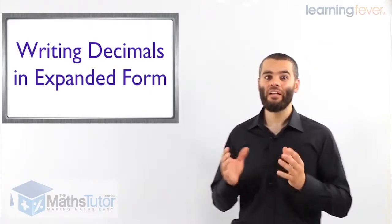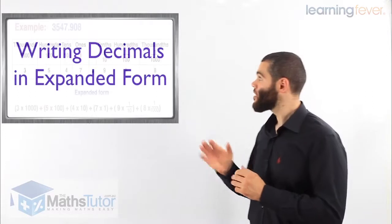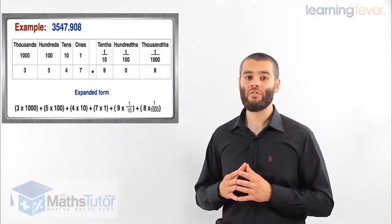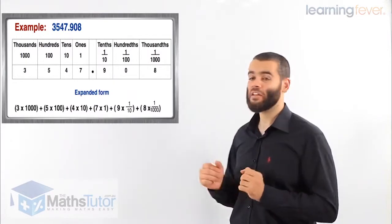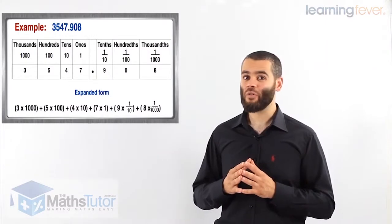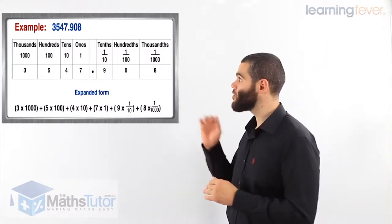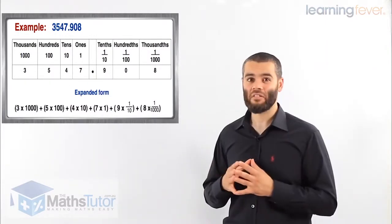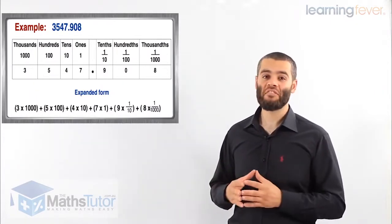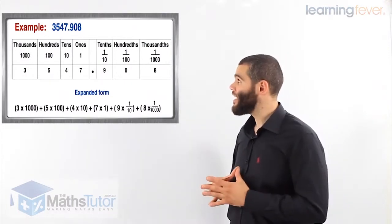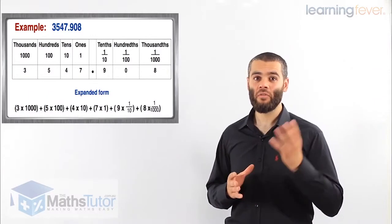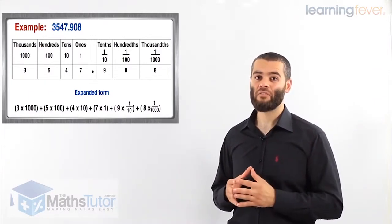Let's look at this example and you'll see how easy it is. In here we have an example that says 3547.908. Now the 3547, we know the 3 holds the value of 1000 and the 5 is the place value of 100, the 4 has the place value of 10, and in the ones column we know the 7 is there.